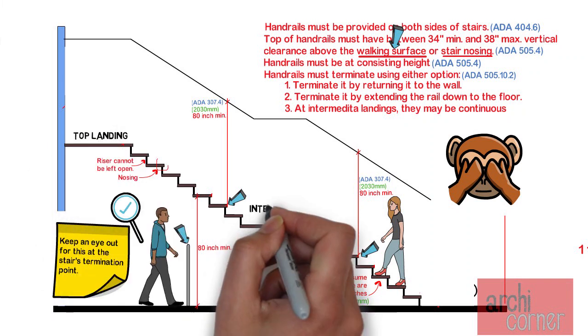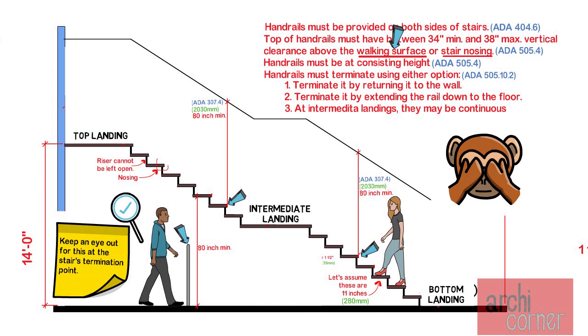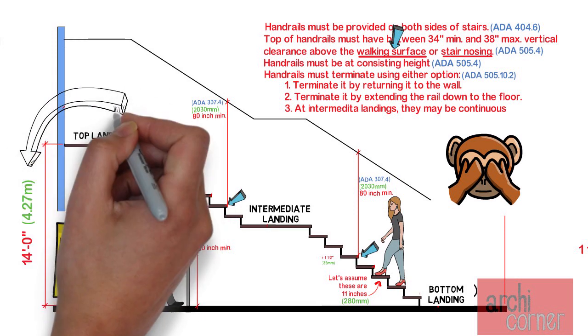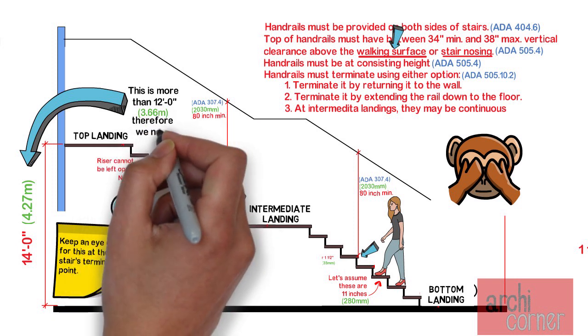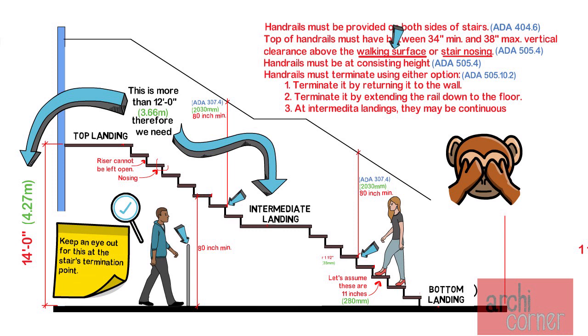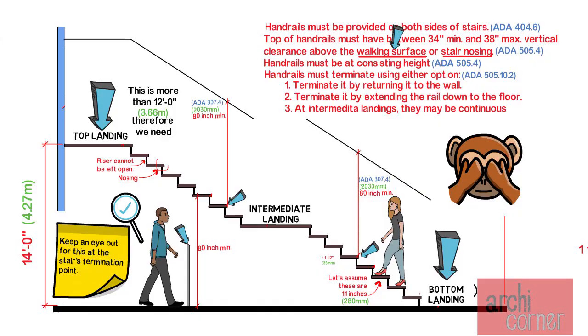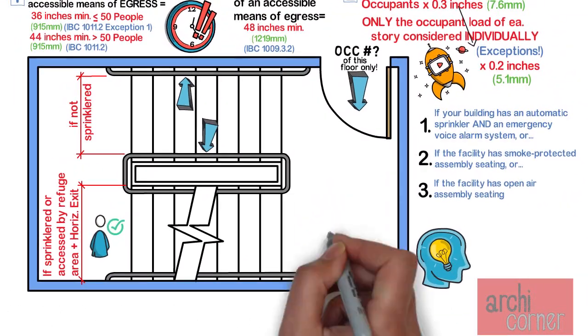Moving on, chapter 10 also addresses landings. A flight of stairs is not allowed to go up higher than 12 feet. That is how you find out if you need an intermediate landing or not. If you need to go higher than 12 feet, you will be required to have at least one intermediate landing depending on how high you go. All stairs have a top landing and a bottom landing. The requirements for both landings are the same and are as follow.